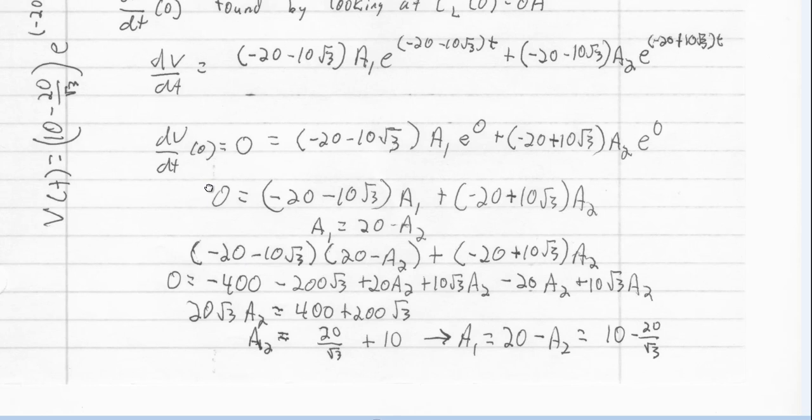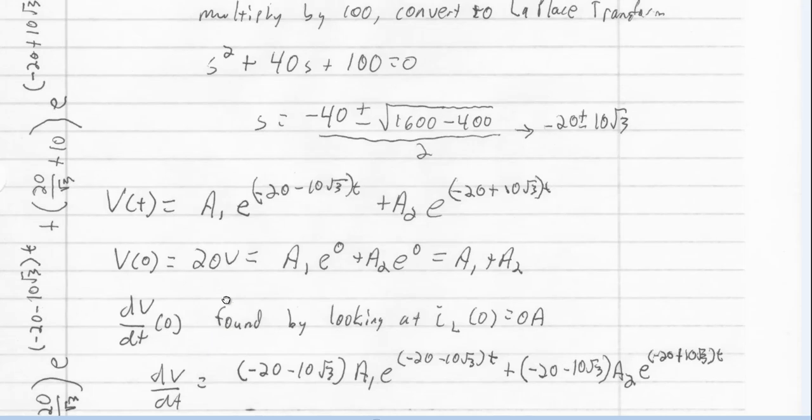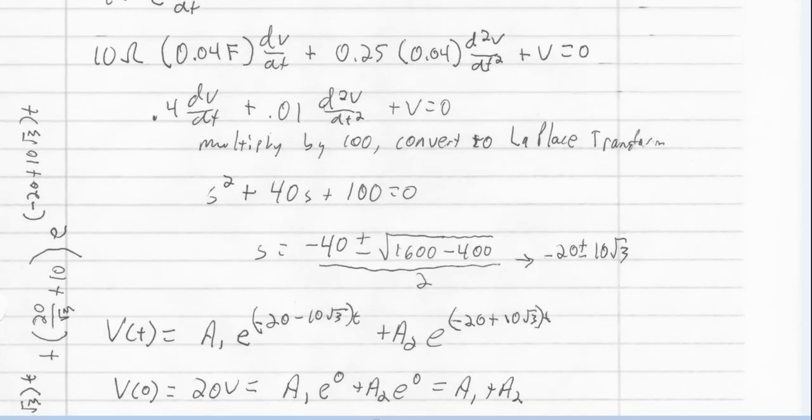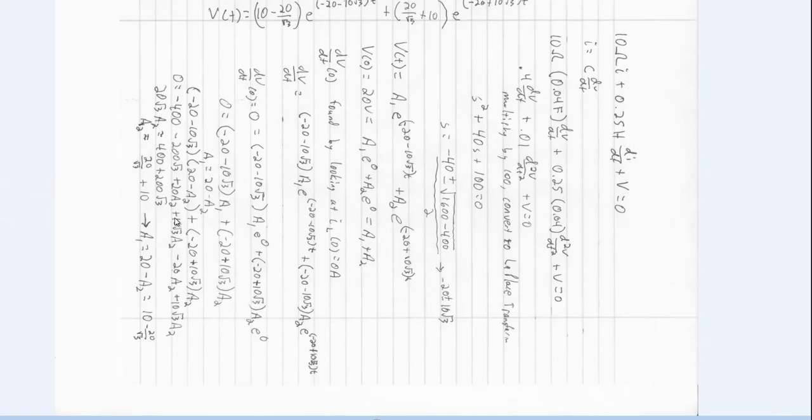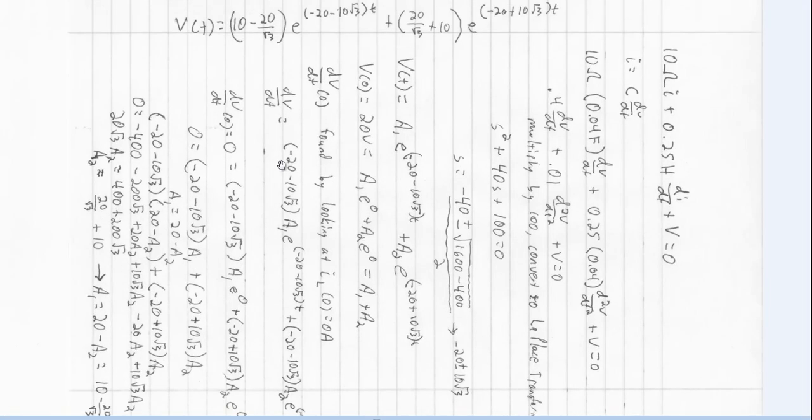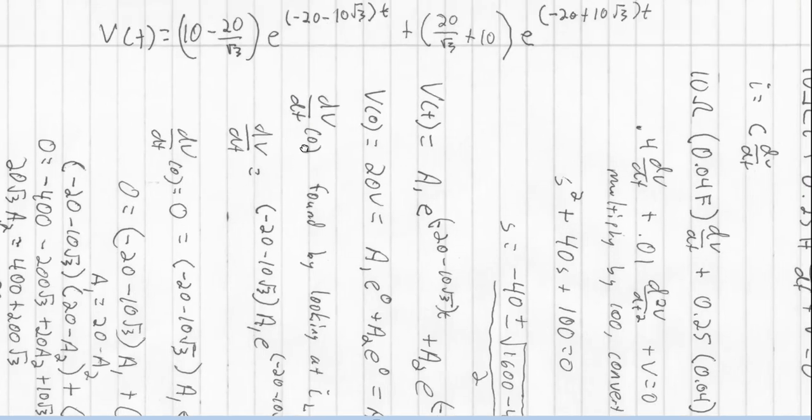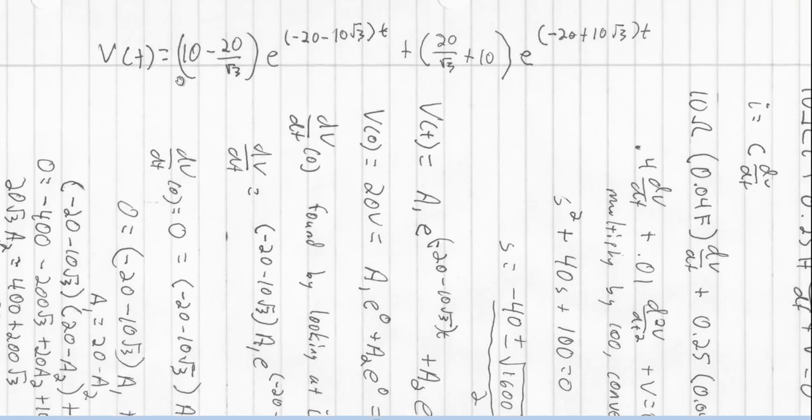And so now, if you look along the right-hand side of this, let me see if I can rotate this image. I'll rotate it clockwise across the top right here. This is our general form solution. V of T is equal to 10 minus 20 over root 3, E to the negative 20 minus 10 square root of 3, that whole quantity times T, plus 20 over square root of 3 plus 10, that whole quantity times E, to the negative 20 plus 10 square root of 3 times T.